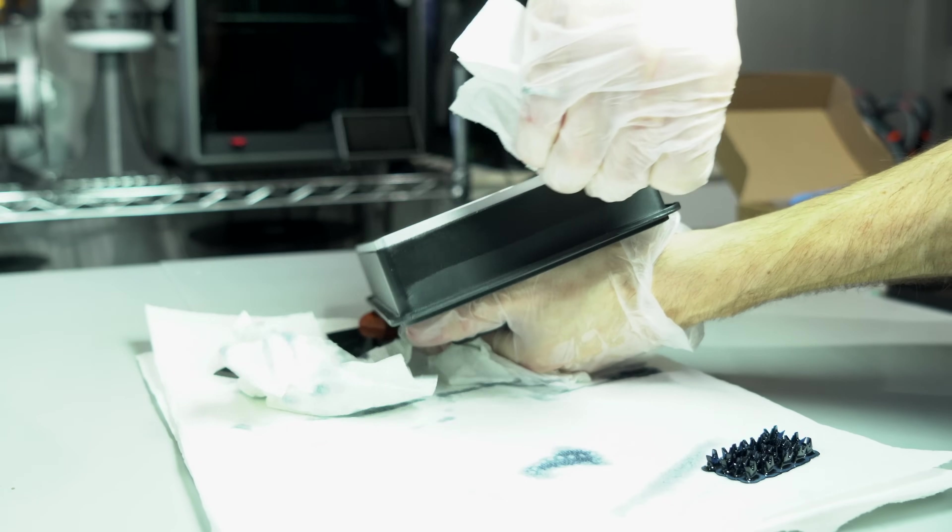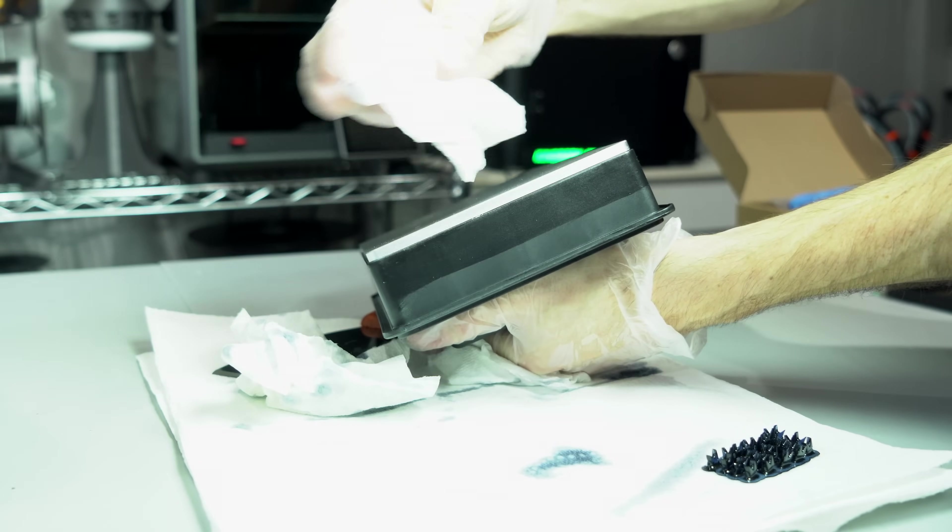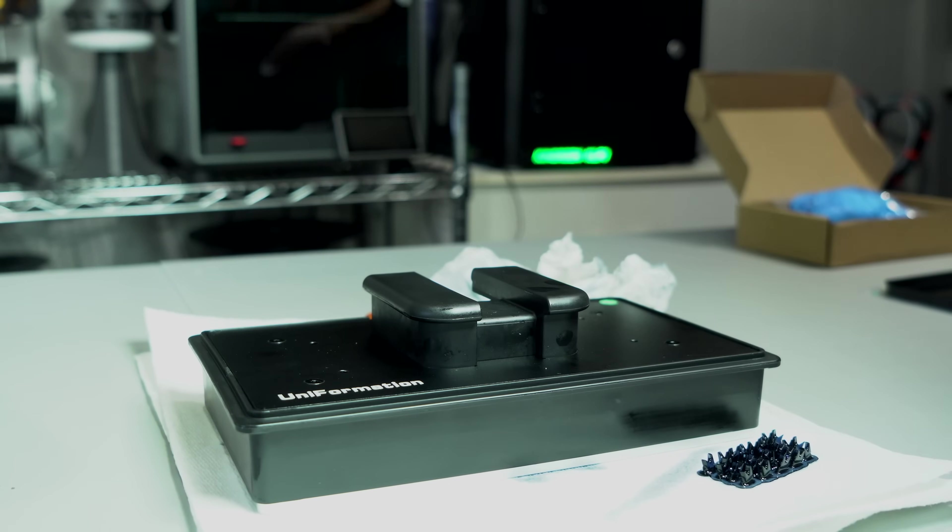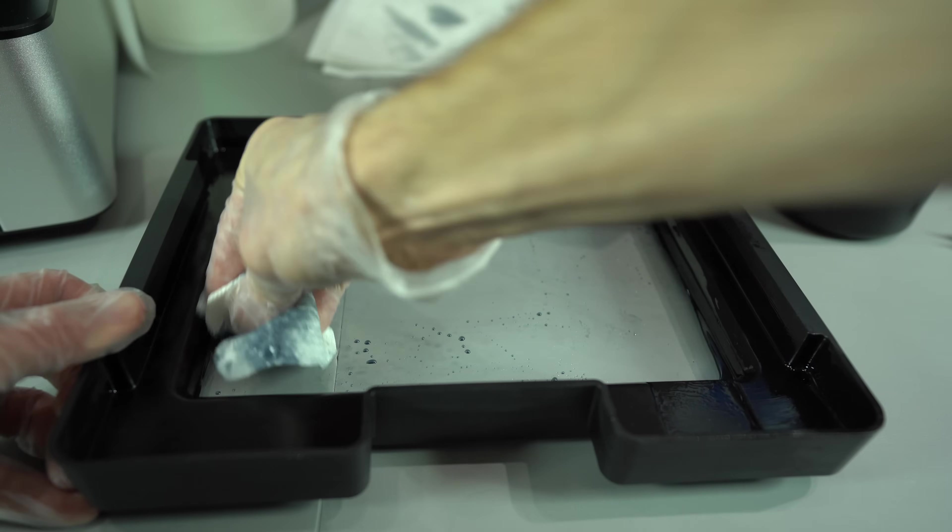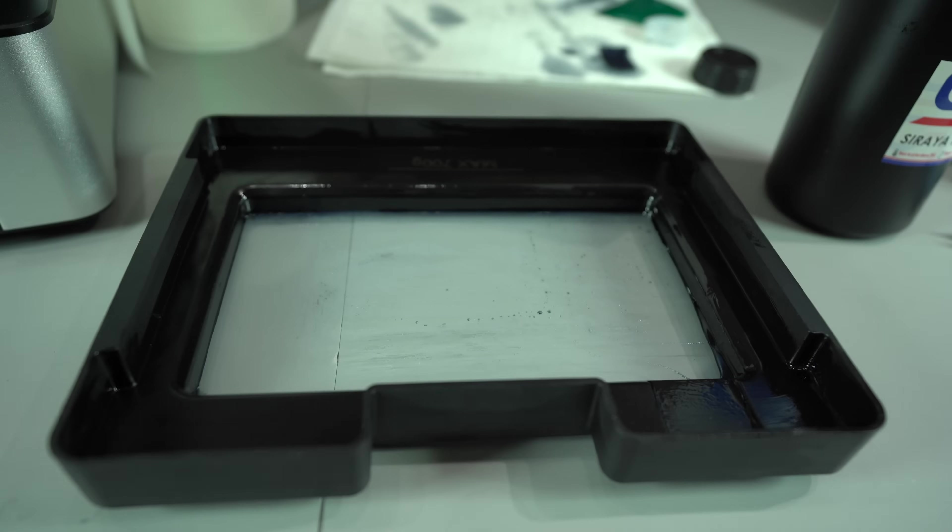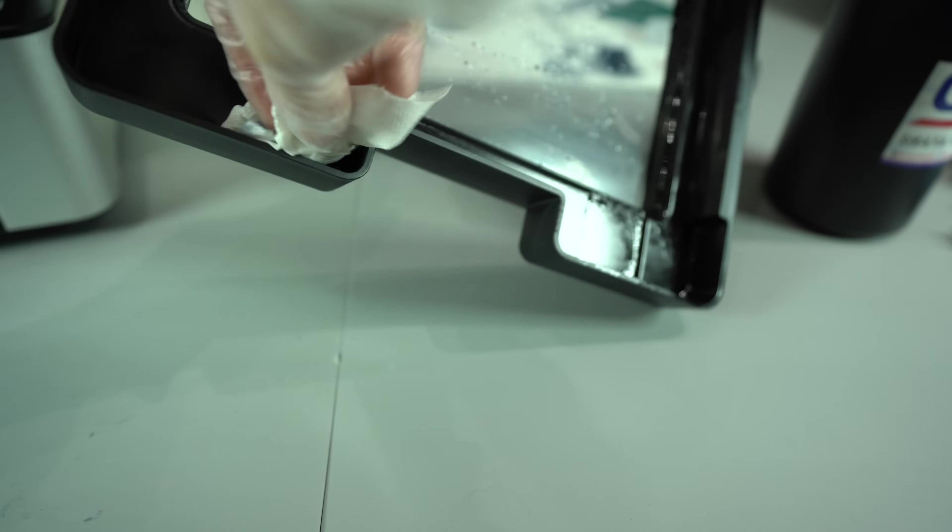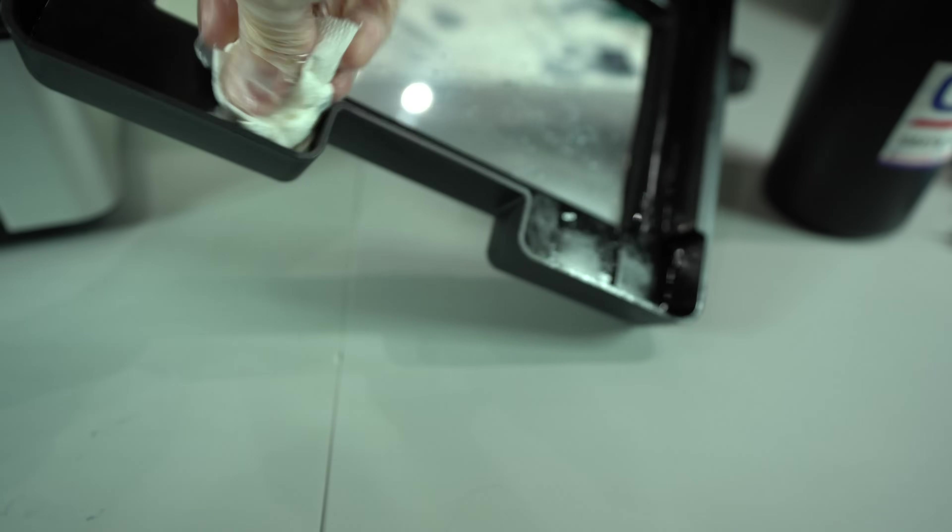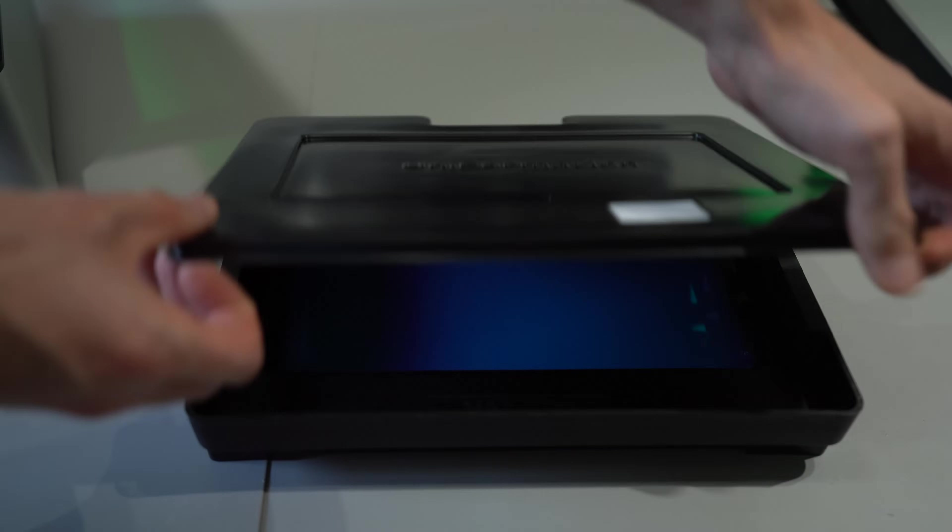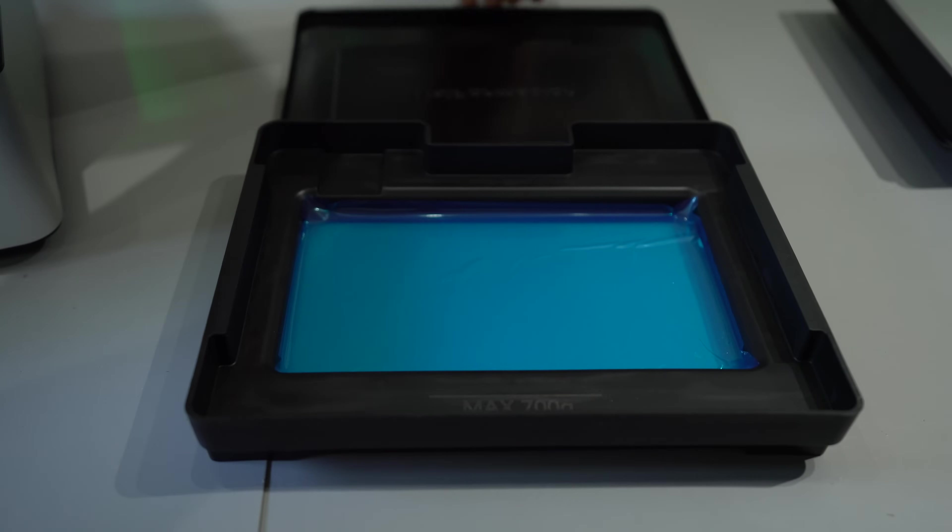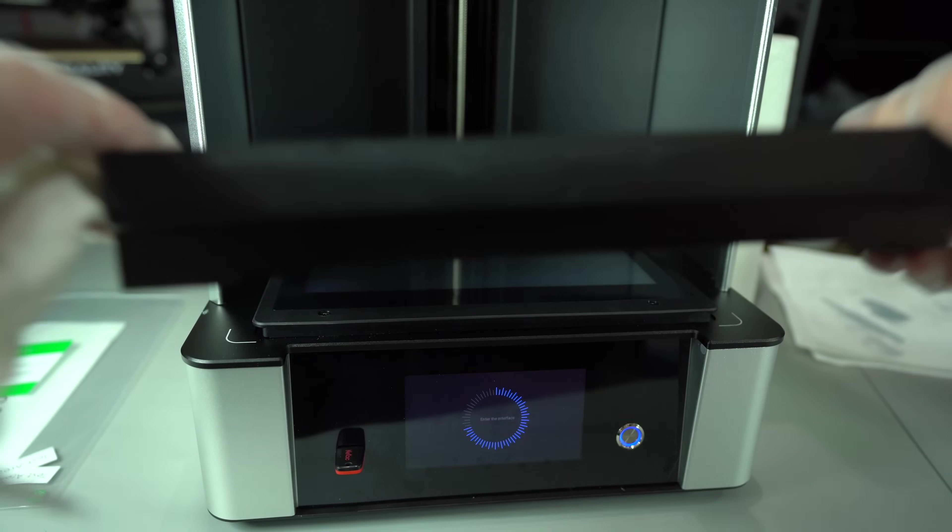The design of the build plate and resin vat results in a lot of nooks and crannies where resin can hide. This makes them very difficult to clean, particularly when switching between resins. If you do intend to switch resins often, I would skip the cleaning and just pick up some spare resin vats. The vats are supplied with a cover, so these could safely be stored outside of the printer with resin still in them.